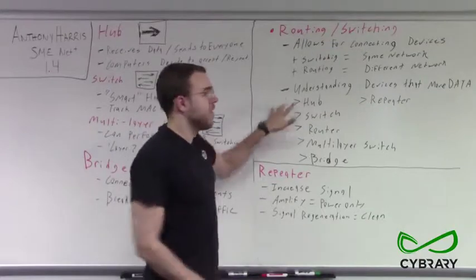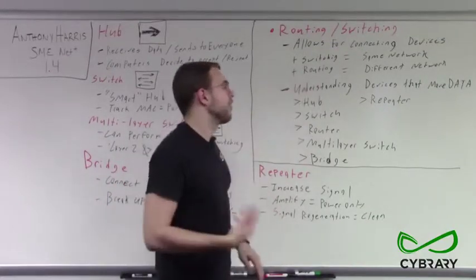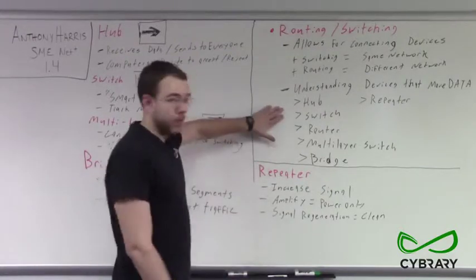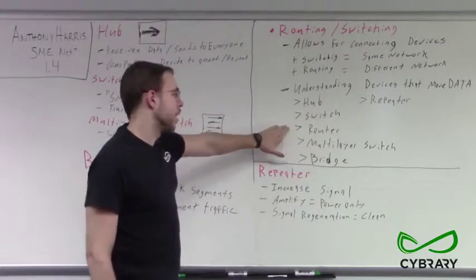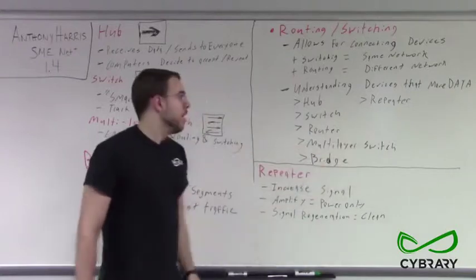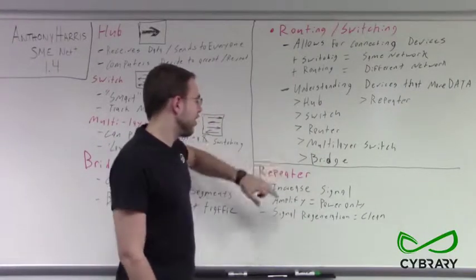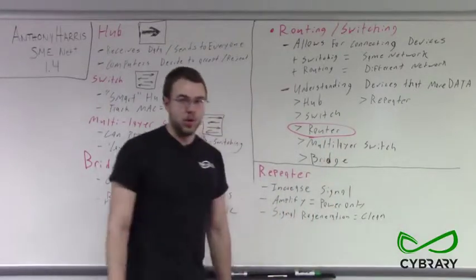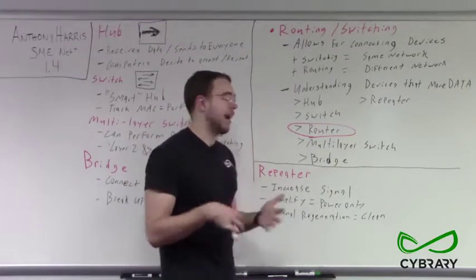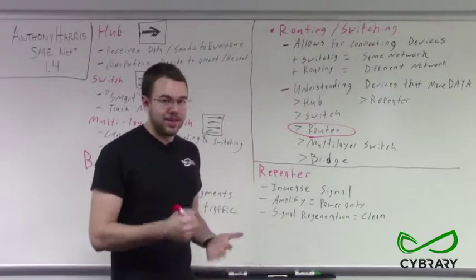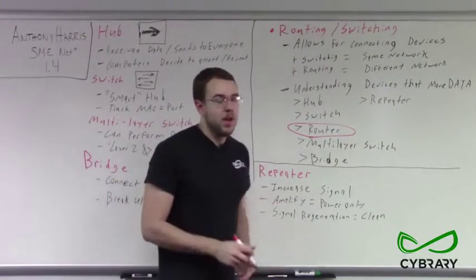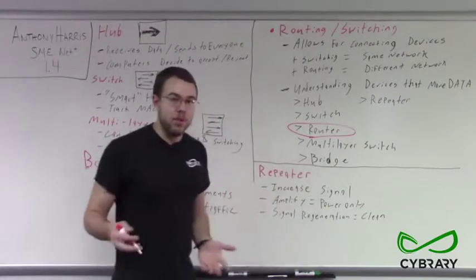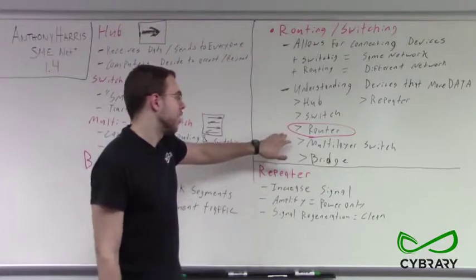We need to understand the devices that move our data — what devices perform switching and routing. Our major devices are hubs, switches, routers, multi-layer switches, bridges, and repeaters. Routers are the ones we'll spend the most time on, as they are very complex in how they talk and move data. We'll also mention spanning tree protocol, which applies mostly to bridges but will come up again when we discuss routers in more depth.